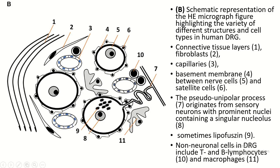Microscopic structures present within the dorsal root ganglia: this is the connective tissue coat, this is fibroblasts, this is a capillary, this is lymphocytes, and this is a macrophage.